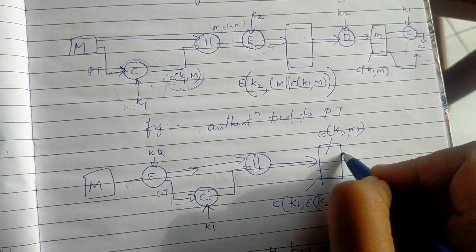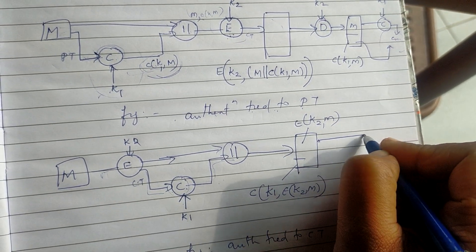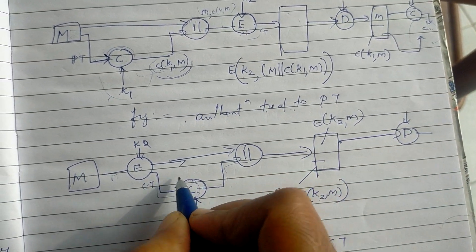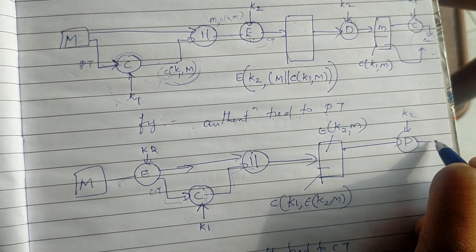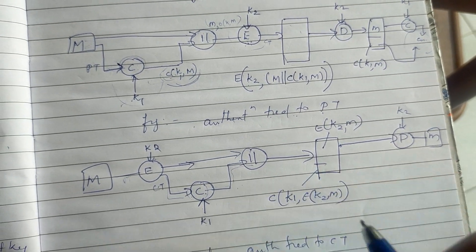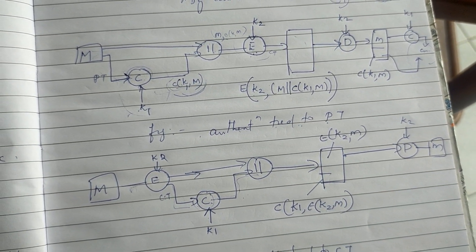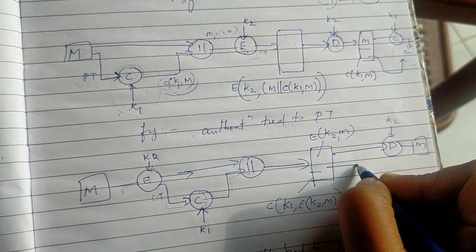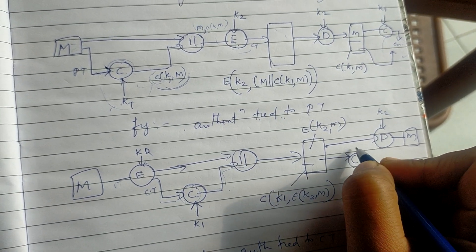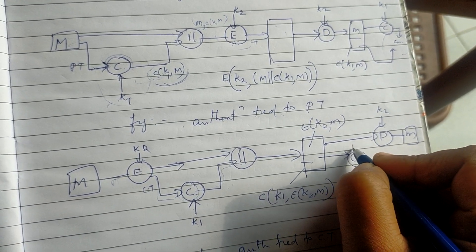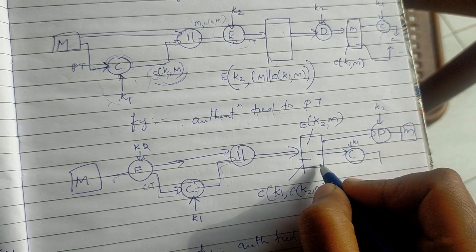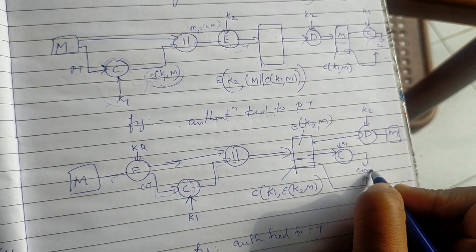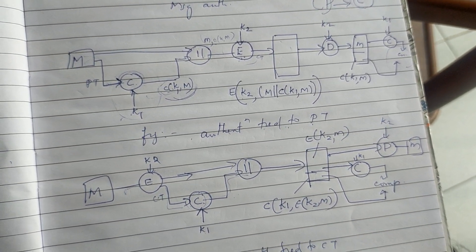On the receiver side, we decrypt. If you have the encrypted message, we get the decrypted message. In this encrypted message, the MAC function is calculated — C of K1. That way we can calculate the MAC to verify the message is not altered.